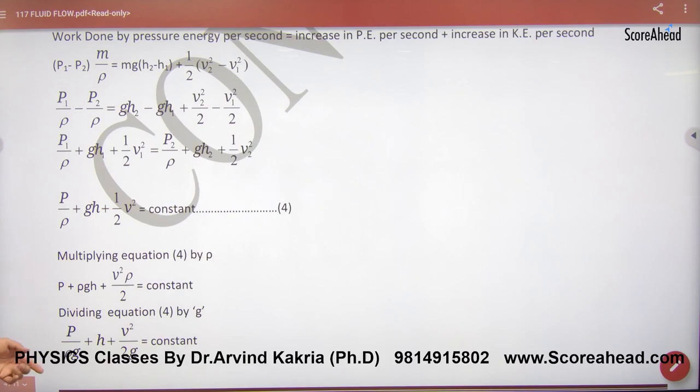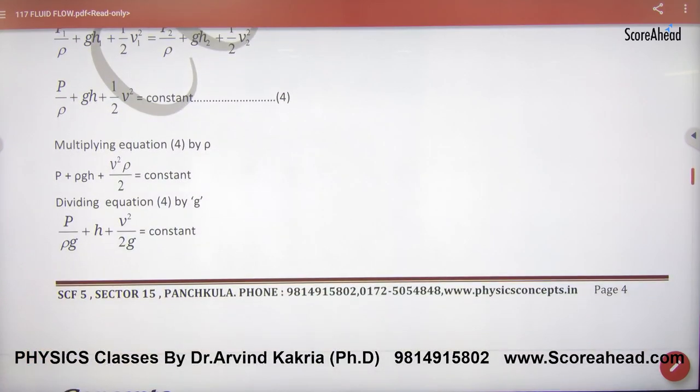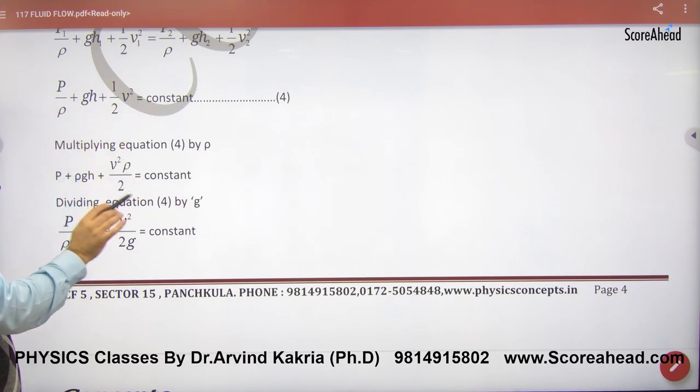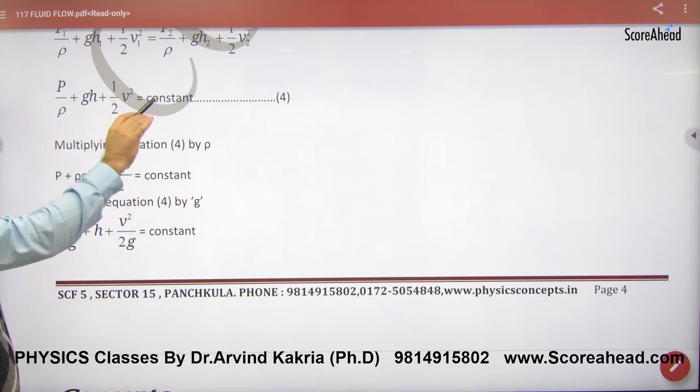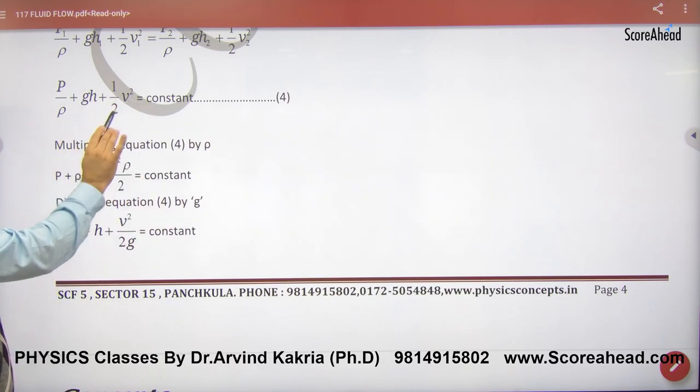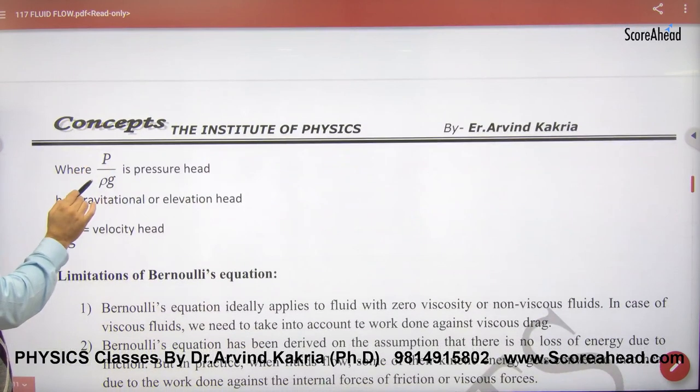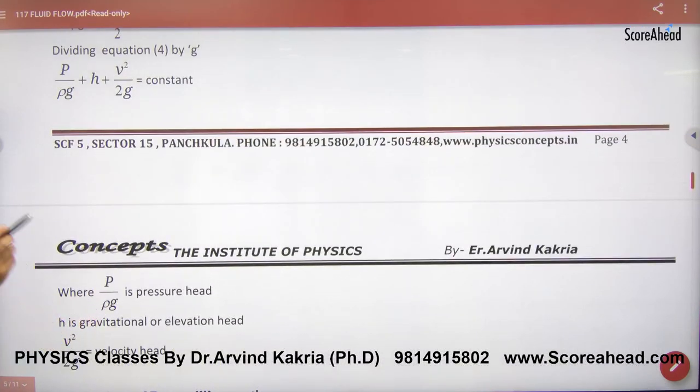It is constant, clear. After that, some modification: some books multiply by rho, density. Then P remains, rho g h, rho v square by two. Or do this: divide both sides by g. Then terms like P over rho g will come. This is called pressure head, elevation head, velocity head. This is written: pressure head, velocity head. This is Bernoulli's theory.